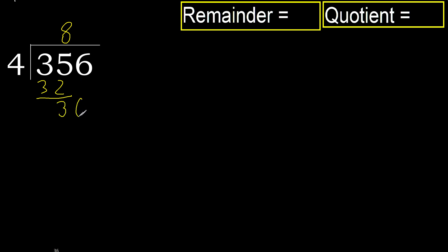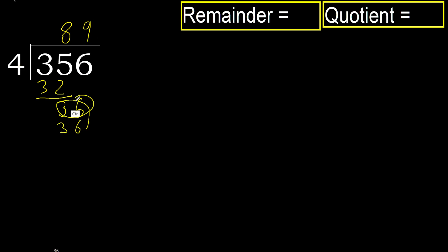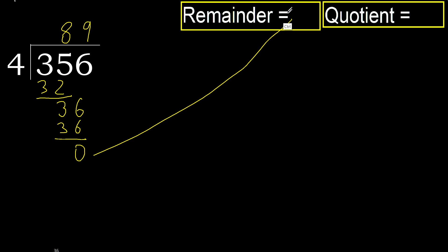Next, bring down 6 to get 36. 4 multiplied by 9 is 36, which is not greater. Subtract. There is no remainder, therefore finish.